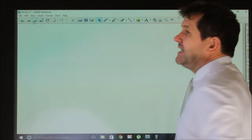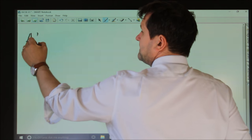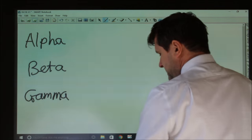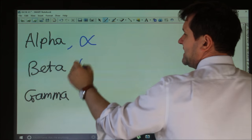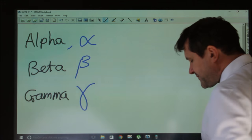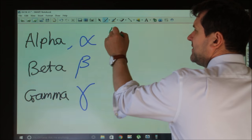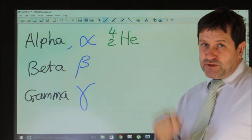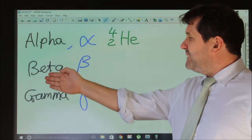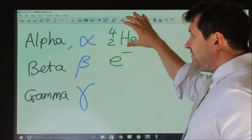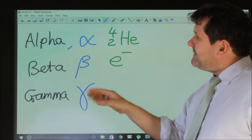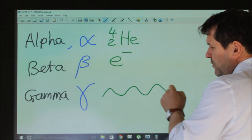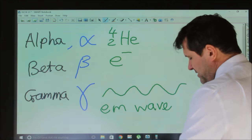There are three sorts of radiation: alpha, beta, and gamma. The symbol for alpha is α, beta is β, and gamma is γ. Alpha is simply a helium nucleus — a chemist would see it with a plus two charge. Beta radiation is simply an electron, so it's a particle. But gamma radiation is an electromagnetic wave — it's not a particle, it's a wave.